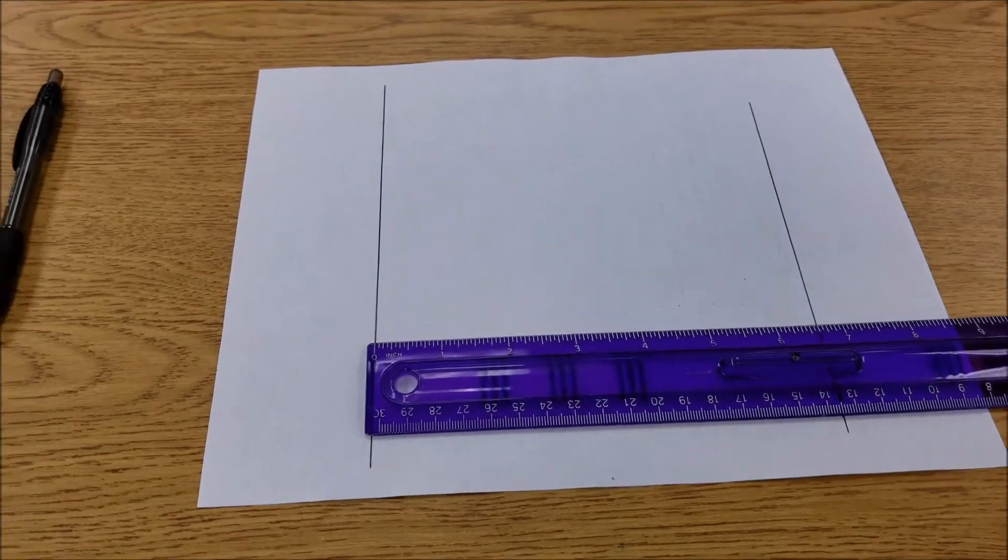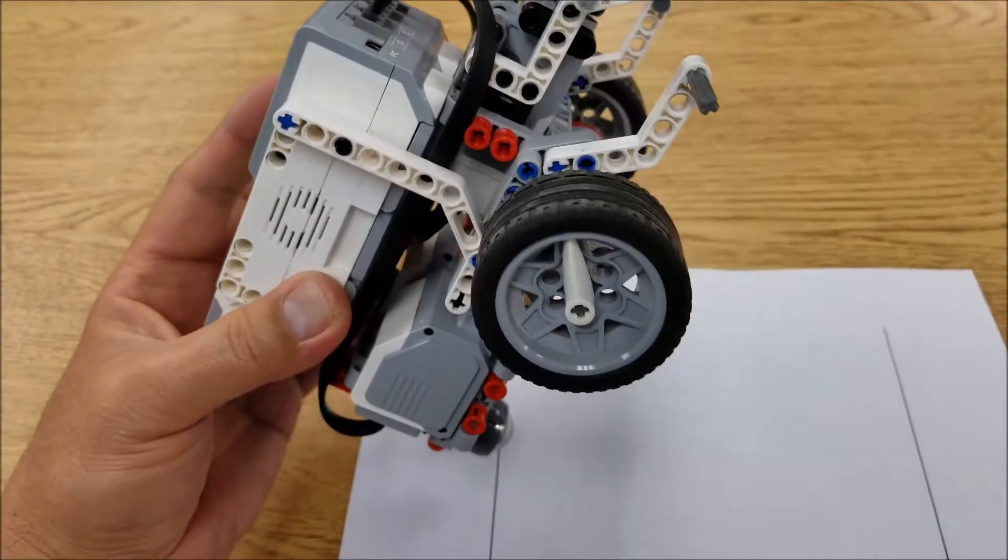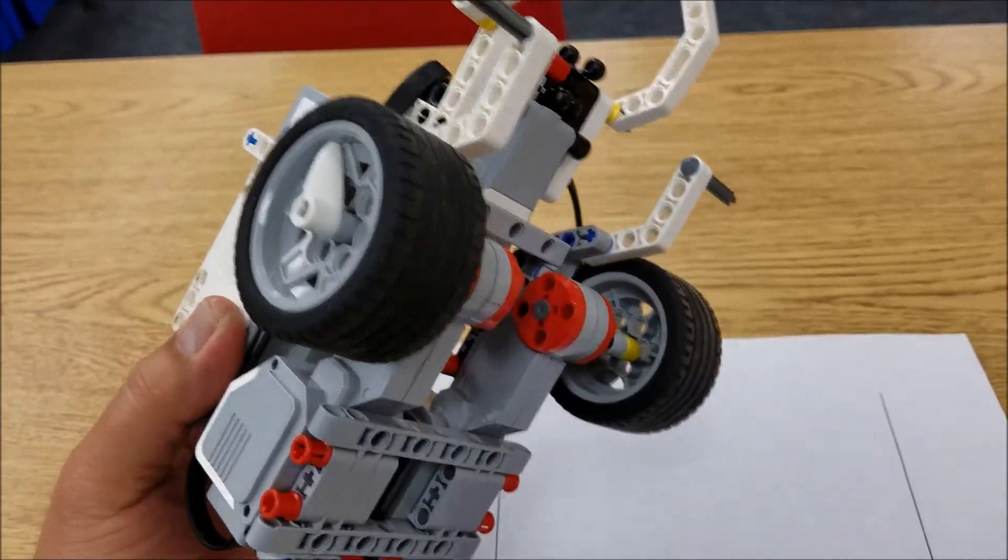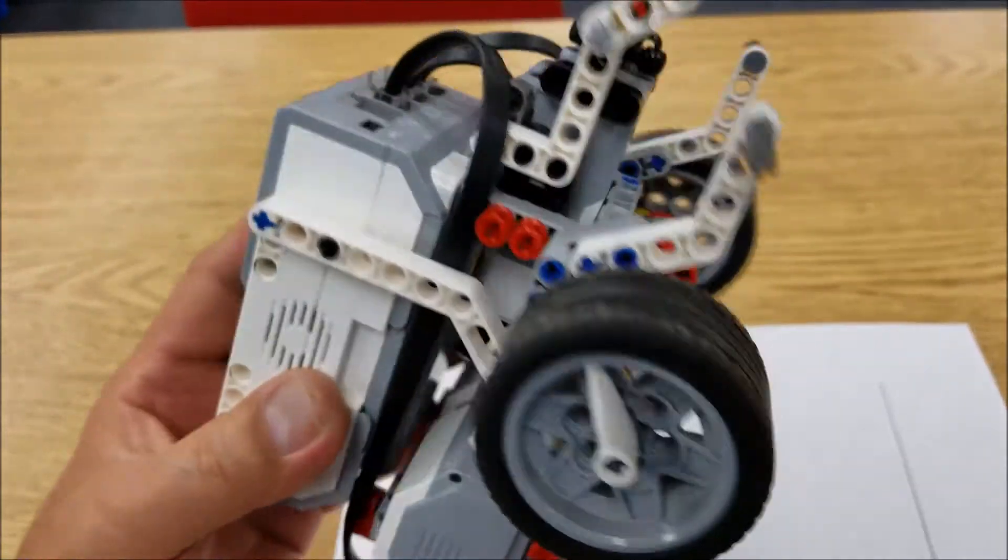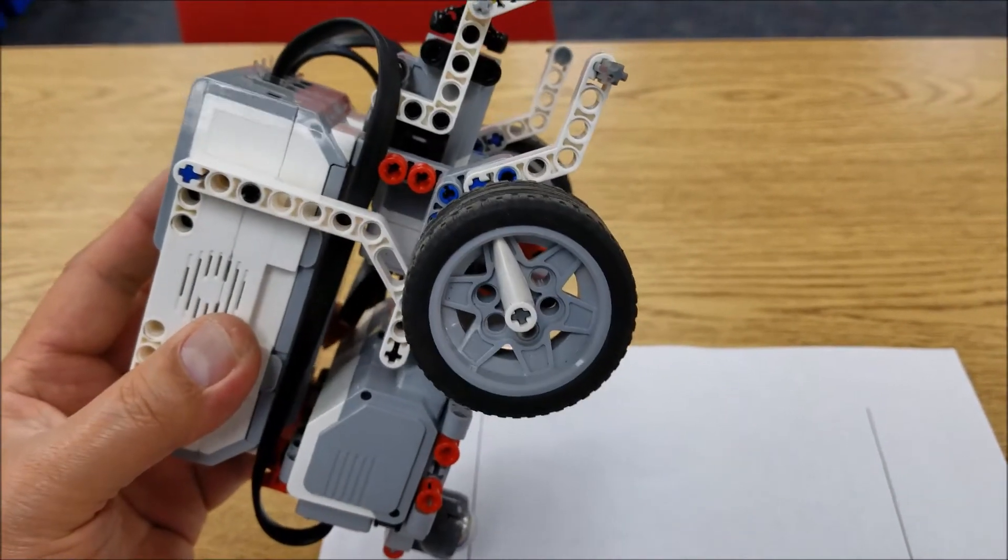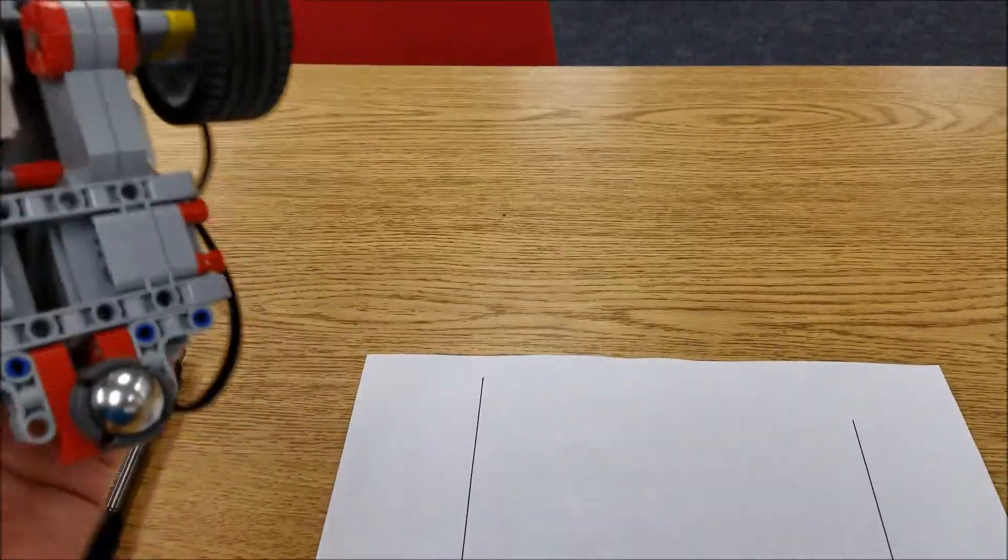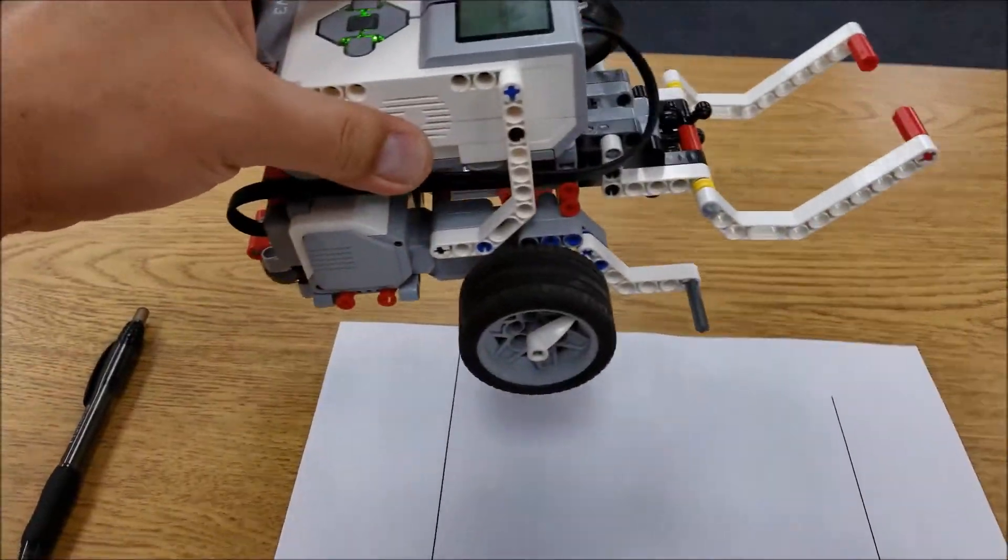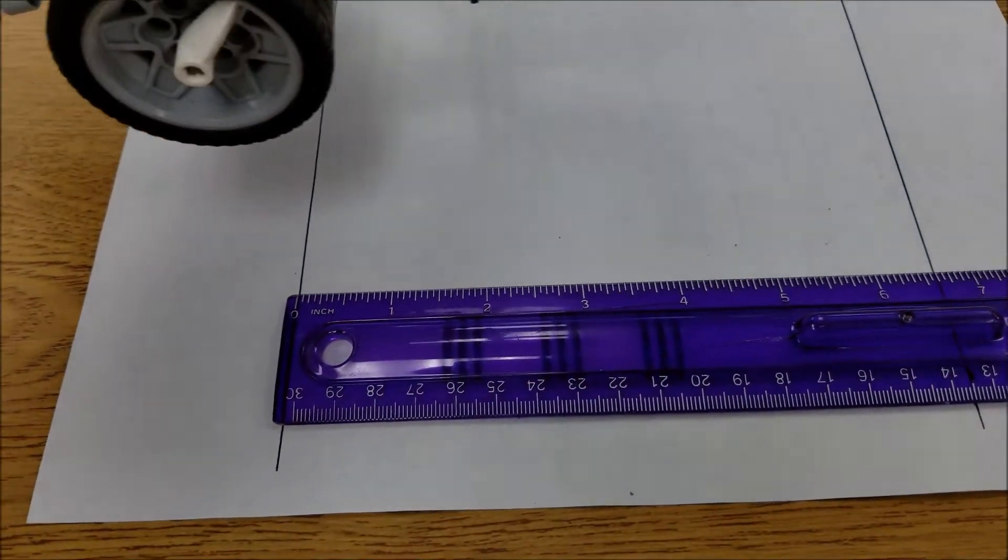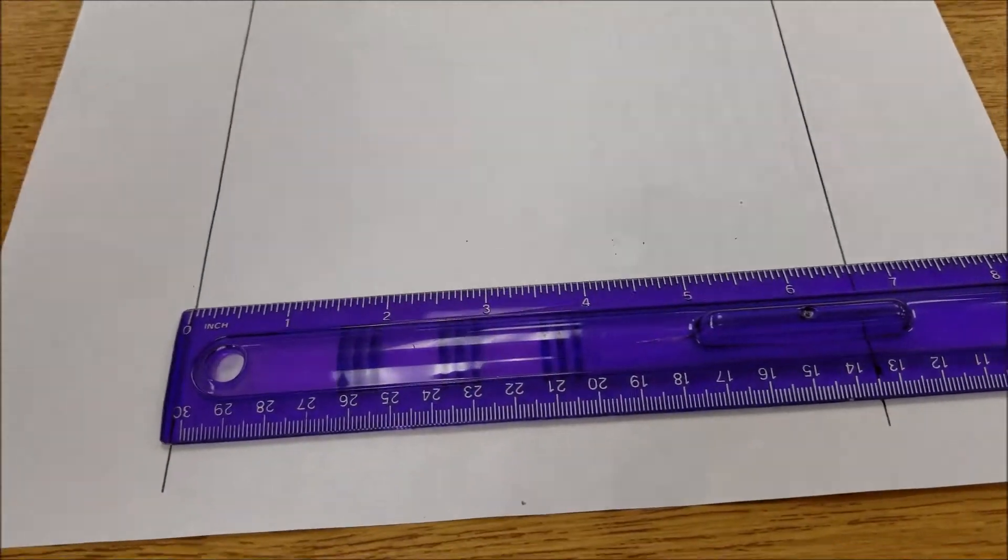So I actually contemplated cutting this tire. I know, isn't that crazy? Cutting the tire and unrolling the tire to see that. And I thought, no way, I just would not feel right doing that. So I thought a better way would just be to let this go for one rotation and to just measure it.